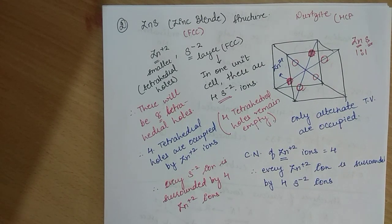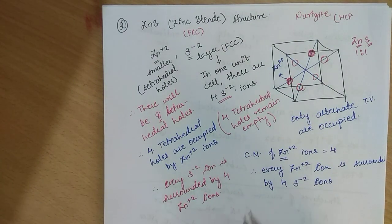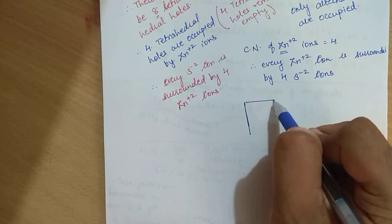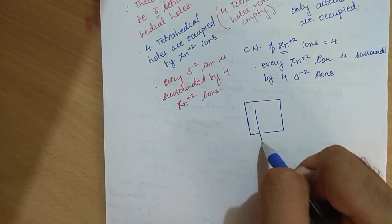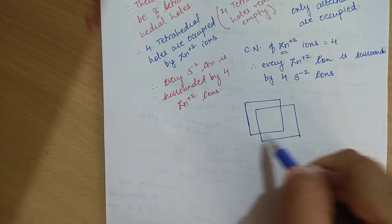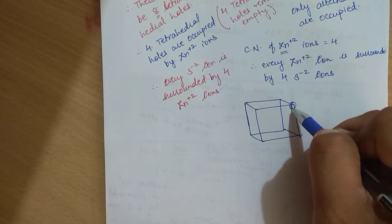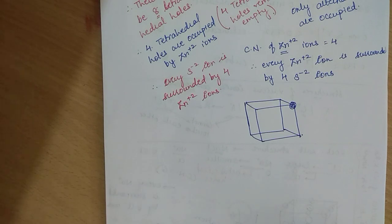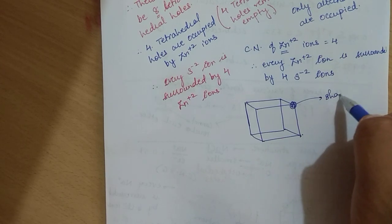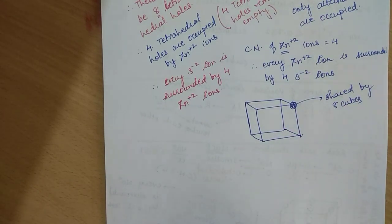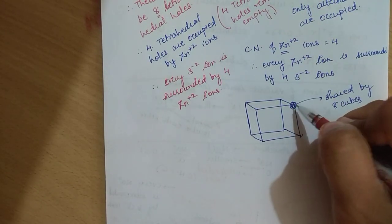Now let's try to understand this geometrically. Every corner is shared by eight cubes. A body diagonal emerges from each corner. We know that Zn²⁺ ions occupy tetrahedral holes, but only alternate tetrahedral holes are occupied. So if this tetrahedral hole is filled, the next one is empty; if this one is empty, the next one is filled.